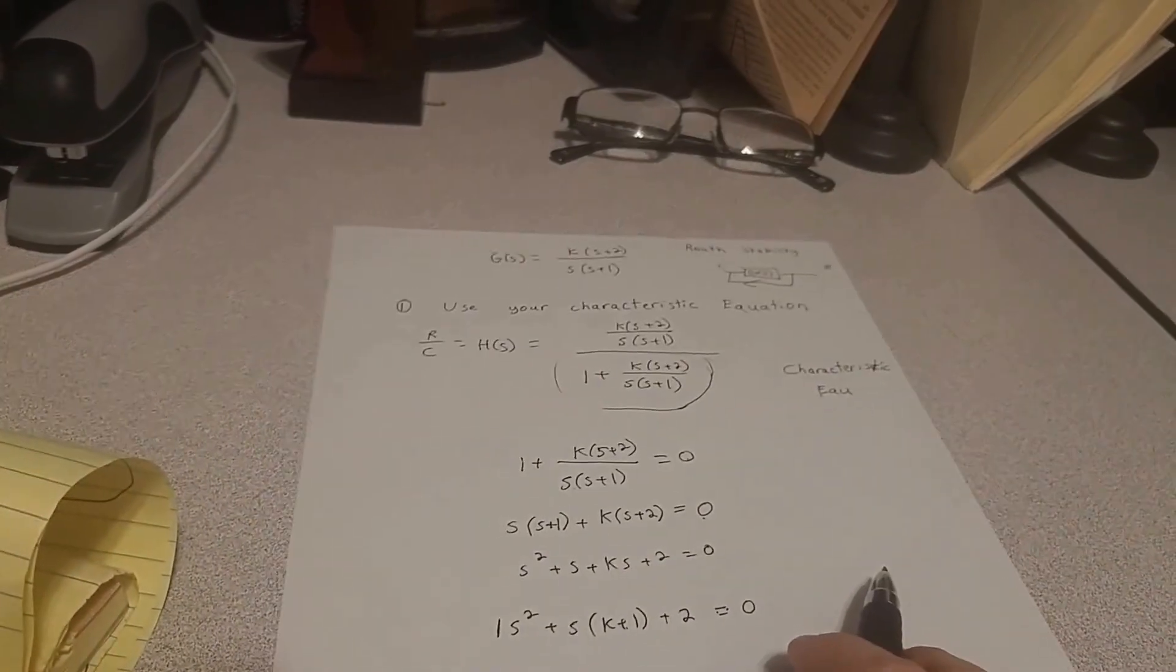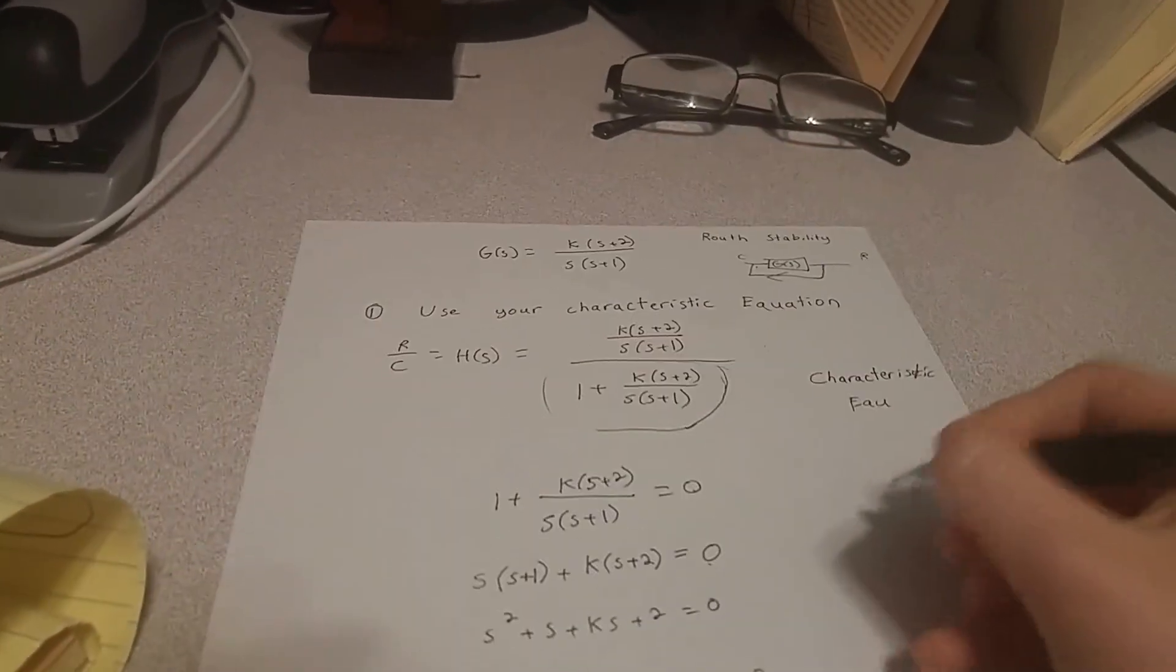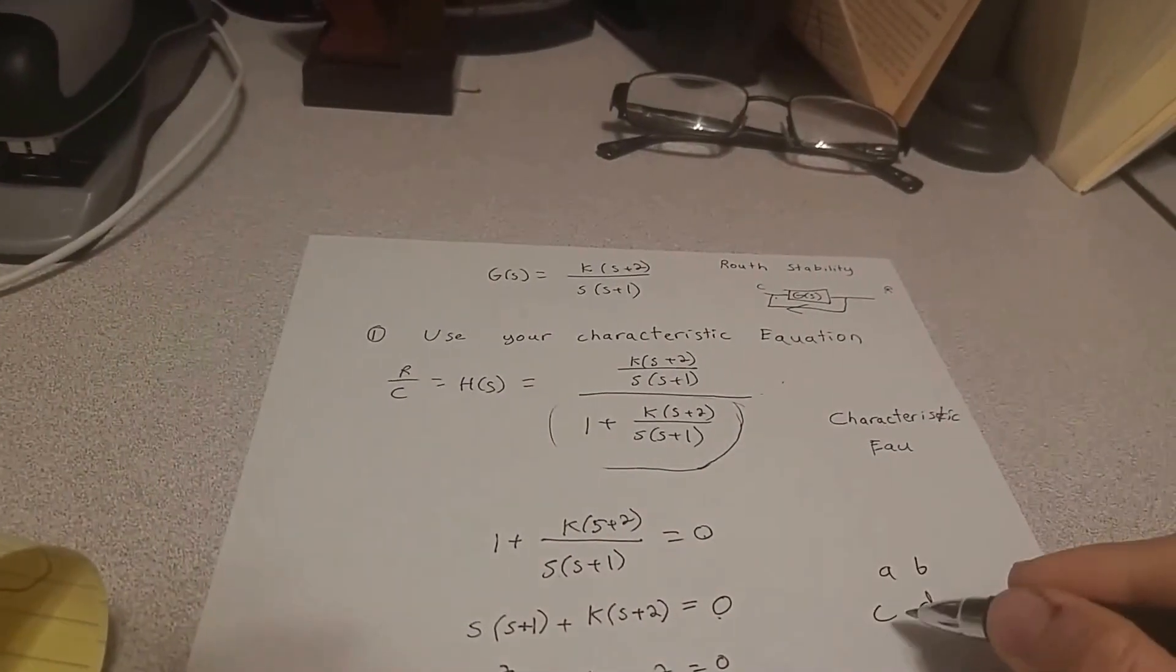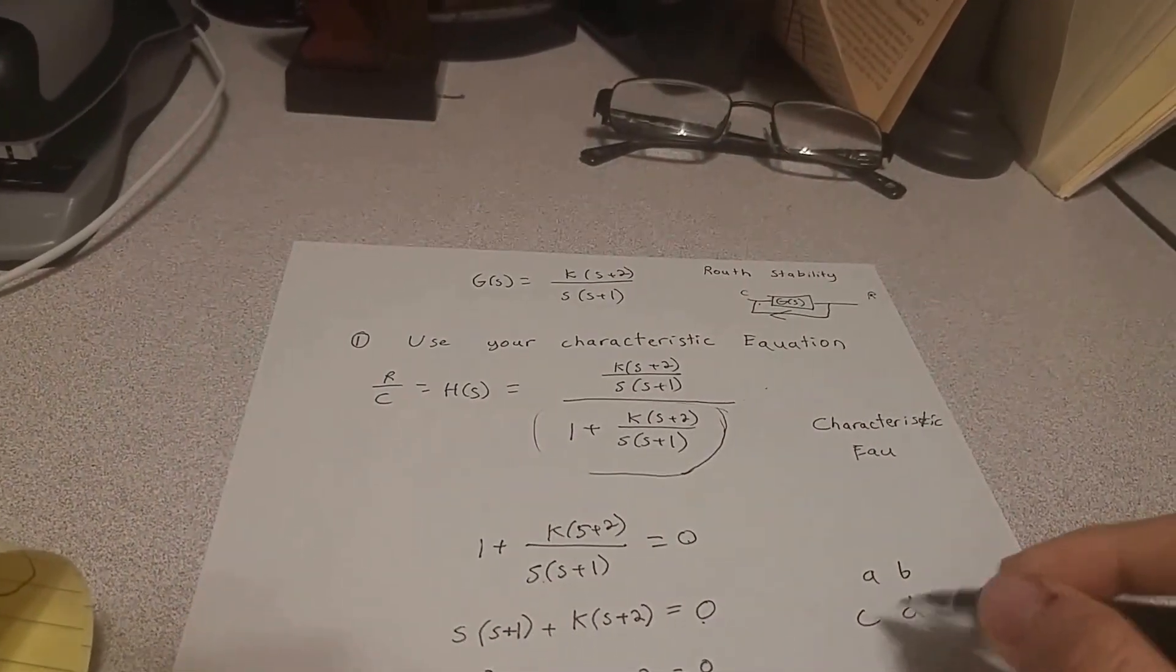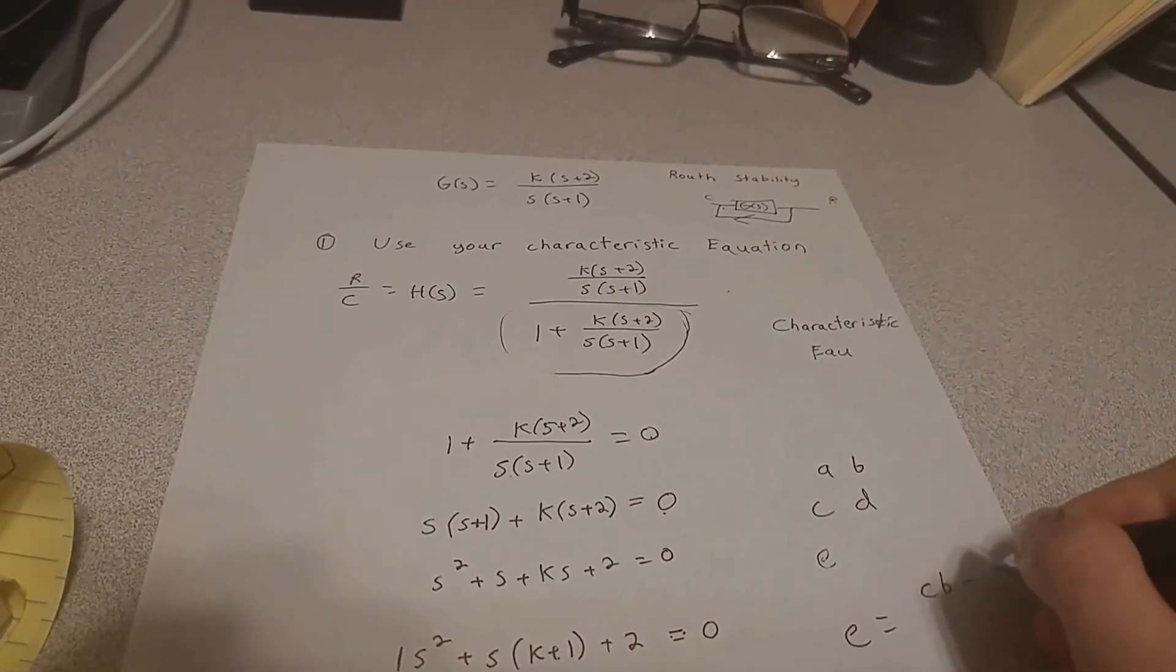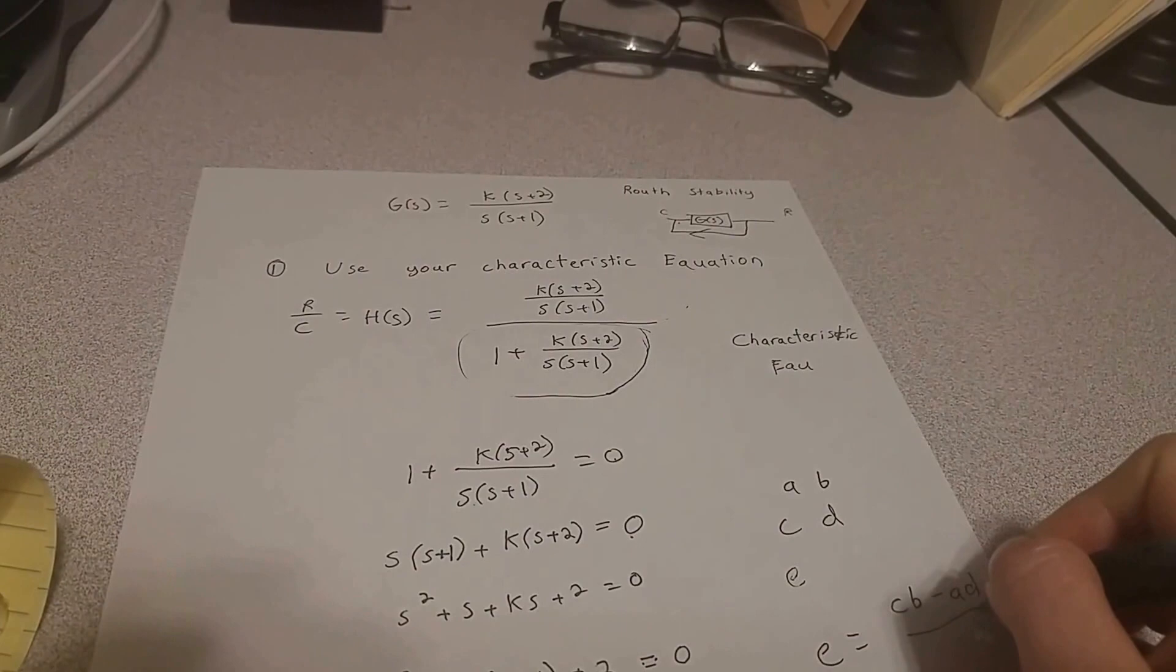When we do a Routh stability test, if we have A, B, C, D for our chart, then the next number below it, like this number right here E, E is going to equal C times B minus A times D divided by C.